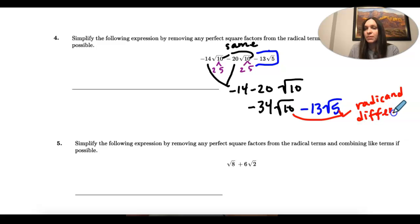And when they're different, that means that we cannot add, we cannot subtract. So this is as simplified as we go. We can only combine the radicands when they're the same. So it would be negative 34 square root of 10 minus 13 square root of 5. And that would be our answer on that one.